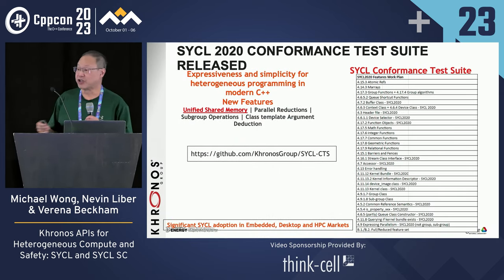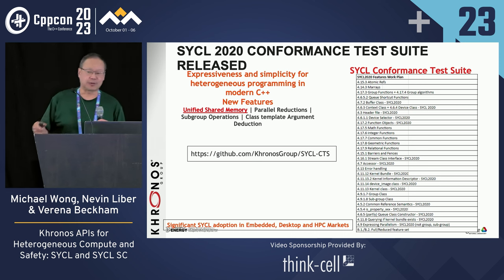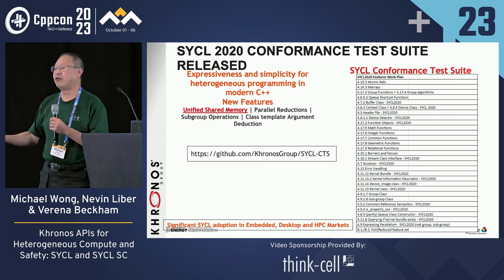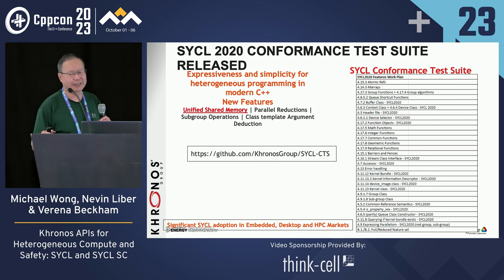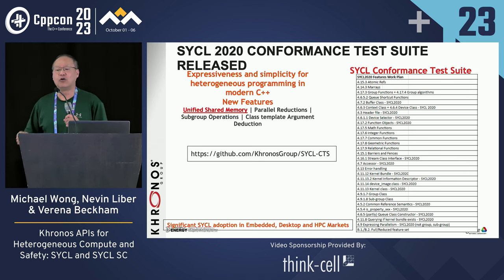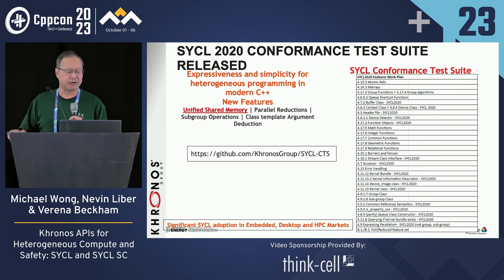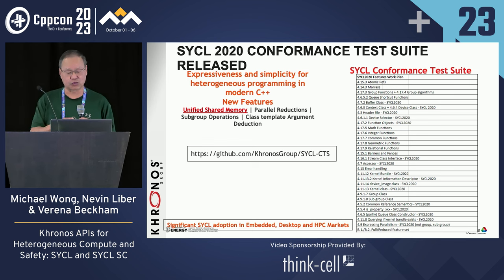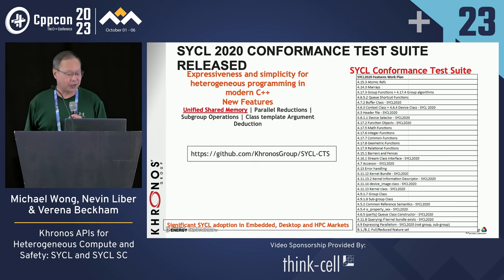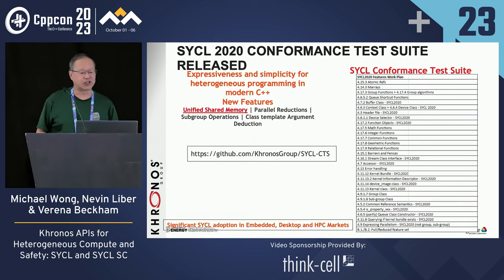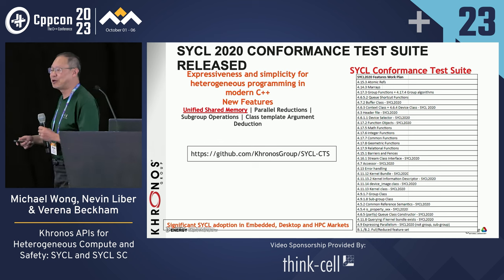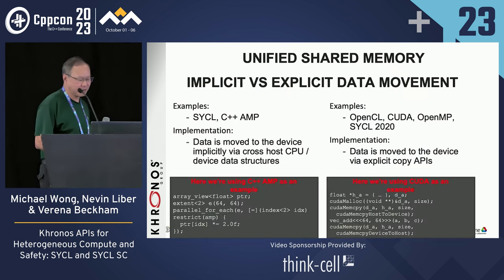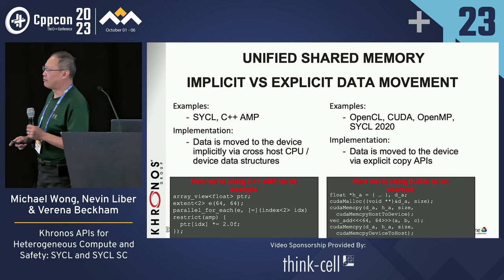Probably the biggest significant achievement of the last year was completing what's called the conformance test. In C++, you're probably not that familiar with the idea of having conformance tests to the language — they do exist but they're proprietary. SYCL and the whole Kronos ecosystem requires this kind of conformance test. The big thing about SYCL 2020 is that it supports unified shared memory, parallel reductions, subgroup operations, and CTAD. I want to highlight unified shared memory because it gives SYCL a particularly important capability.